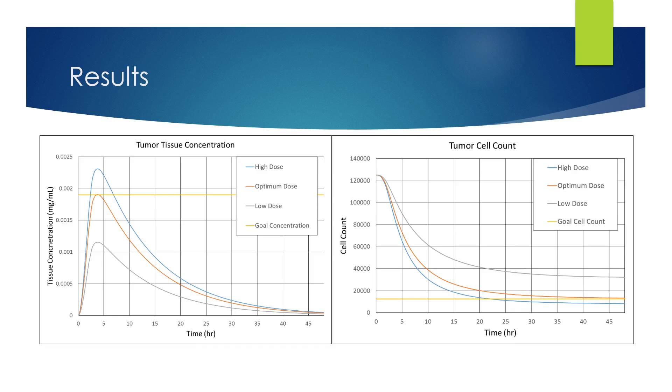And then on the graph on the right, you see the same dosages. The low dose being about 0.06 milligrams per milliliter in the IV bag. The optimum about 0.099. And the high dose being about 0.12 for reference. And then so the graph on the right shows tumor cell count, literally the number of cells in an average tumor of about one millimeter in diameter.